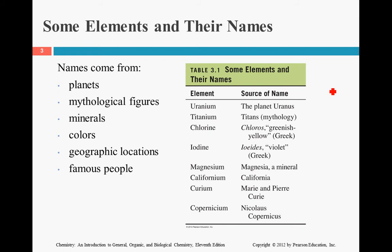Where do these elements get their names from? Some of them are named from planets, like Uranium, like Uranus. Some of them are mythical figures, the Titans. Minerals, colors, geographic location, for instance, Californium. Famous people, Madame Curie, Curium, things along those lines. Whoever discovers the element has the opportunity to name it.